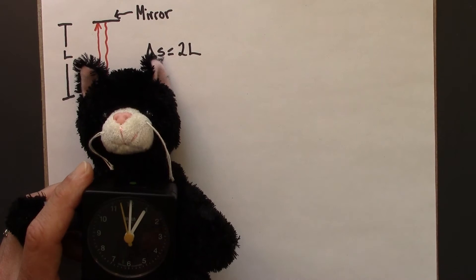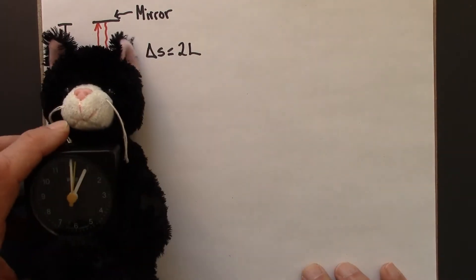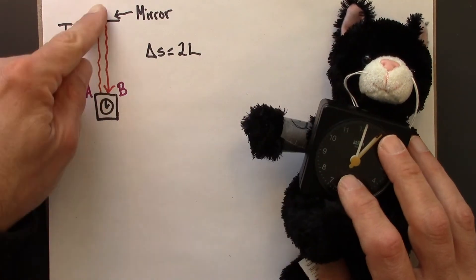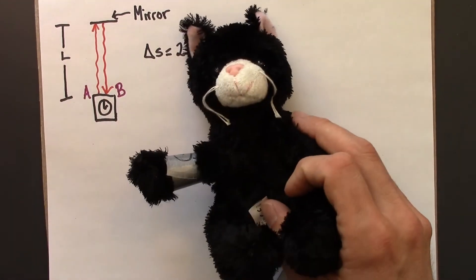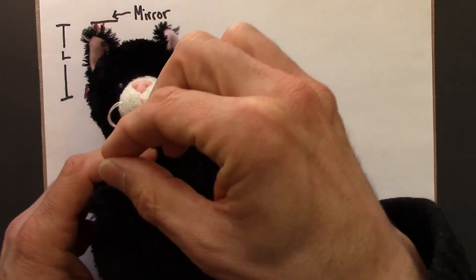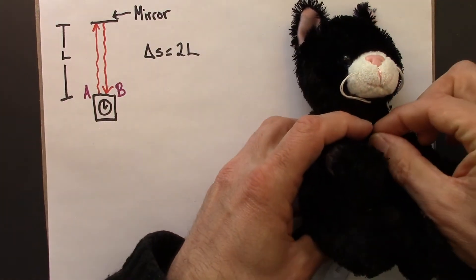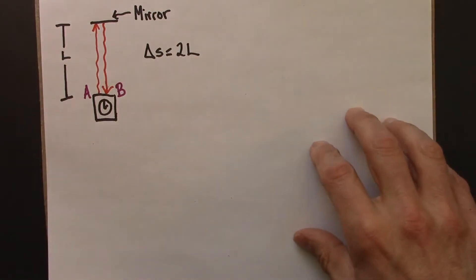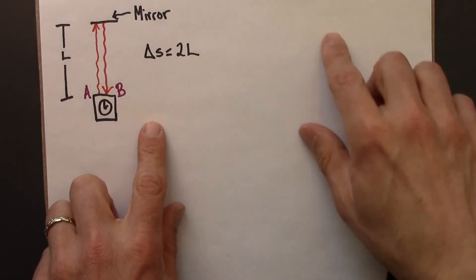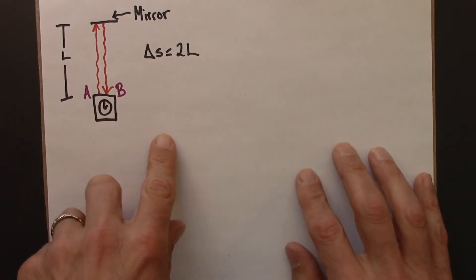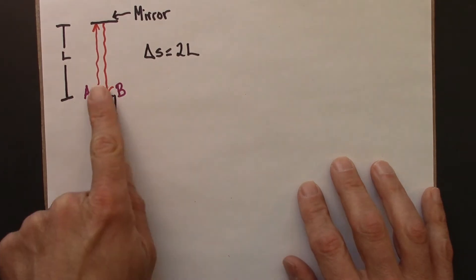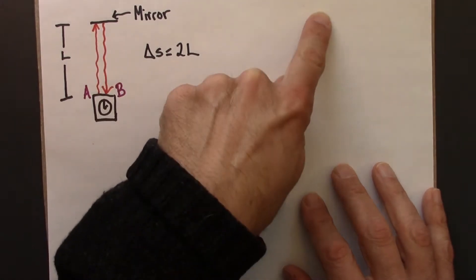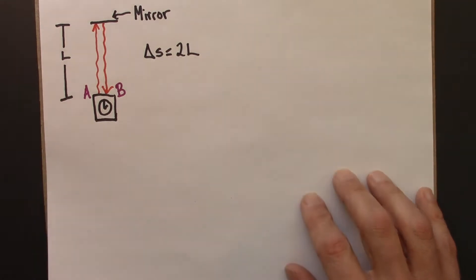Now let's analyze this from Anastasia's frame. Anastasia sees Beowulf moving as this light bounce is happening. So Beowulf is moving along, light bounces up and then bounces back. In that frame, from that point of view, the light is not going to go straight up or straight down, but is going to go up at a diagonal and back at a diagonal.